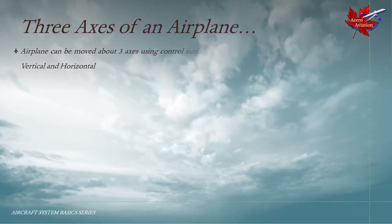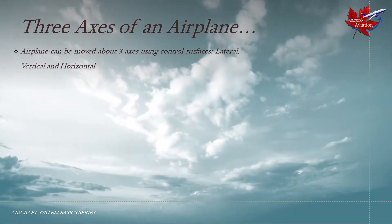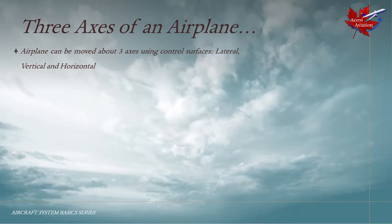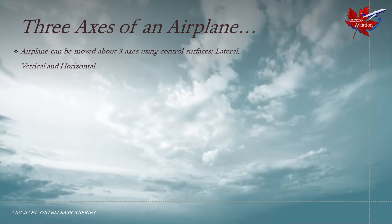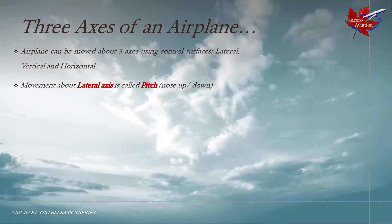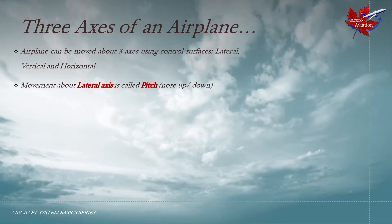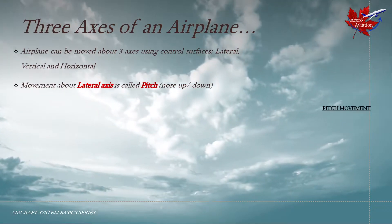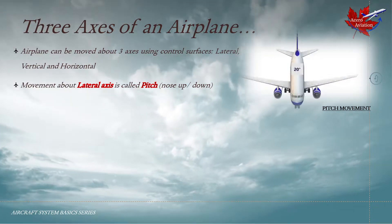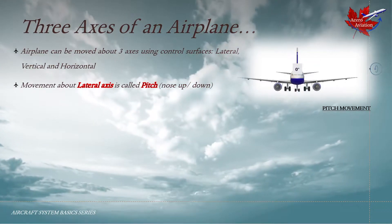The airplane can be moved about three axes using control surfaces: the lateral axis, the vertical axis, and the horizontal axis. Movement about the lateral axis is called pitch, or nose up and down of the aircraft. This is what pitch movement looks like.